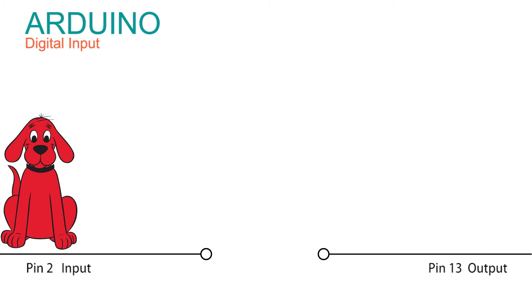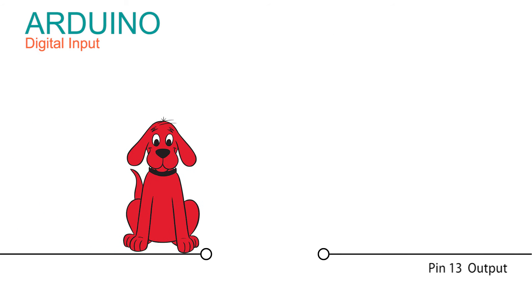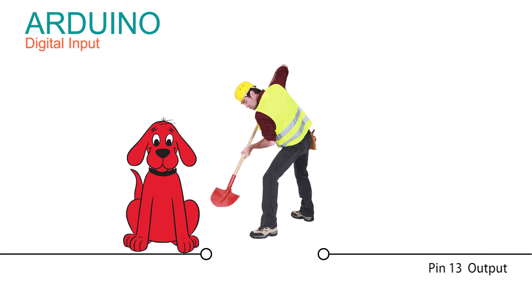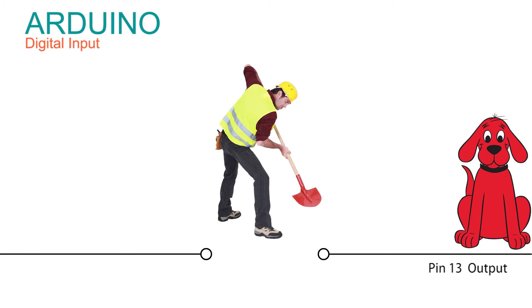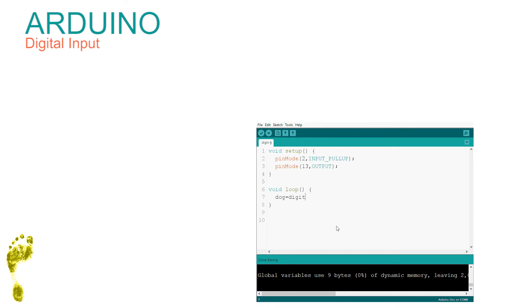The command would read: dog = digitalRead(2). Then we write it to pin 13: digitalWrite(13, dog). We use dog to store the value from the read and then write it to the LED. When we verify this we get a red error: 'dog was not declared in this scope.' This means we did not warn the Arduino — we did not declare that we were going to use dog.